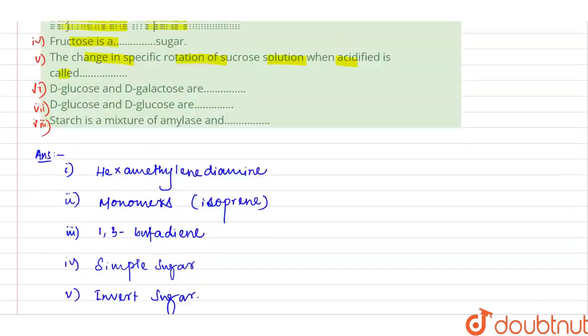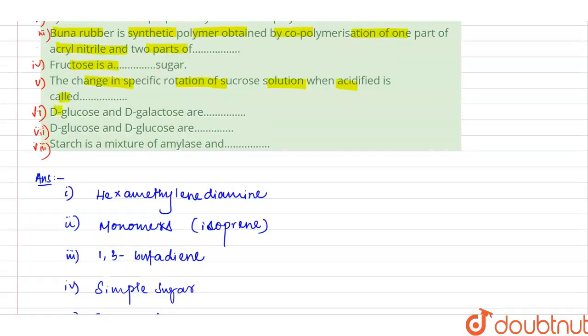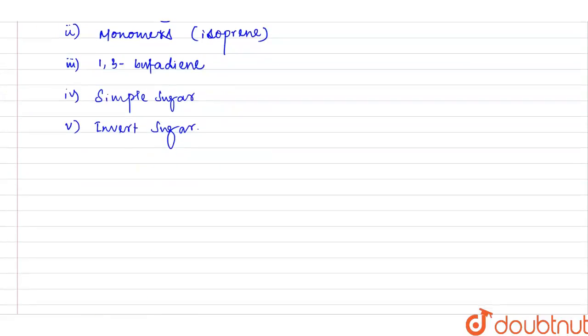Now number six: D-glucose and D-galactose are, these are C4 epimers.